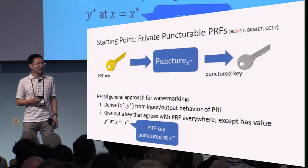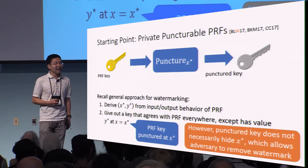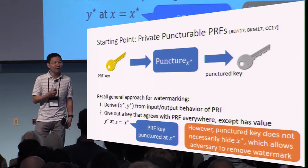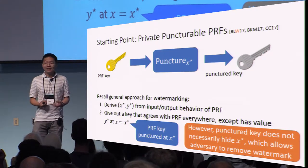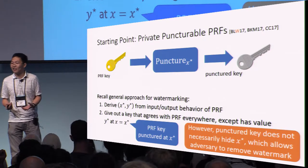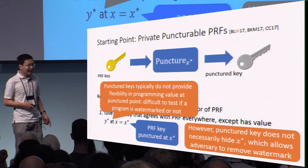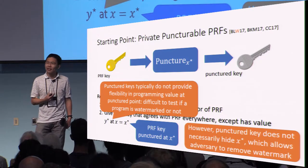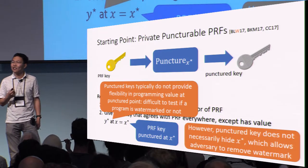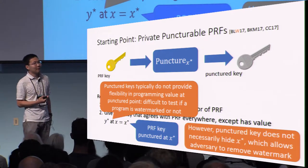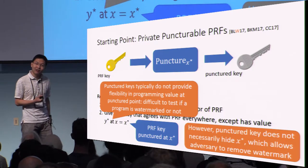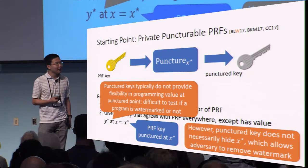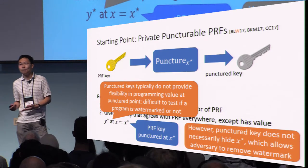There are actually many issues with this. Let me outline two of them. One problem is that in typical puncturable PRF constructions, the punctured key does not hide the point that is being punctured. The point x* that we puncture is usually part of the description of the secret key. And if this is the way we're going to embed the watermark, it's trivial for the adversary to remove it — it just does something different at the point x*. The second problem is more difficult: punctured keys actually do not provide us much flexibility in choosing the values obtained when the punctured key is used to evaluate at the punctured point.